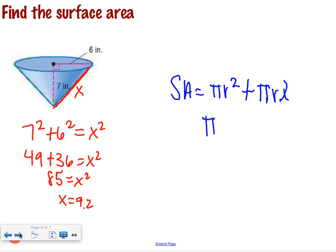What is our radius? 6. So pi times 6 squared plus pi times 6 times our slant height of 9.2. You guys just want to give me a grand total? Did you get your calculator?